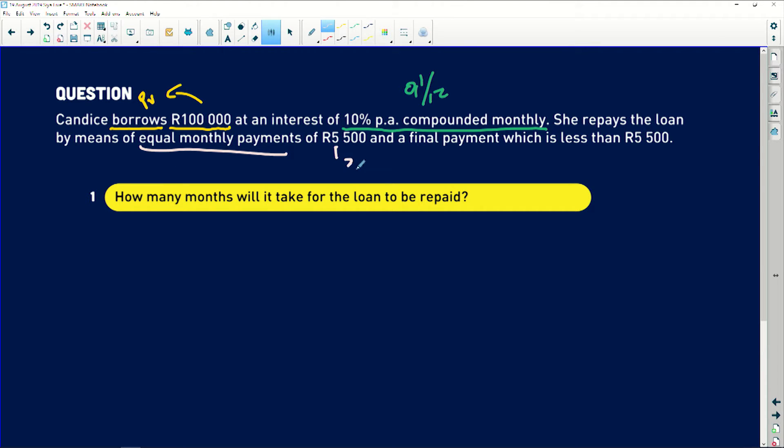And then the final installment which will be way less than what she has been paying monthly. Now, the first question is how many months will it take for the loan to be repaid?